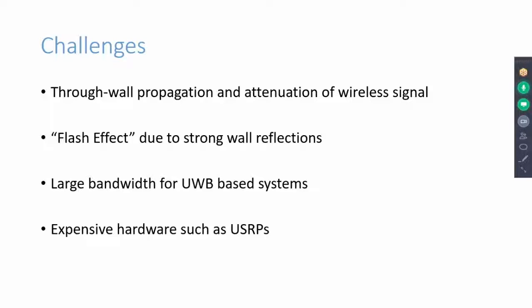There are many through-wall imaging radar systems that are based on ultra-wide bandwidth principle. But these bandwidth-hungry systems are not available for common use. Our literature survey shows that there are also few works that rely on USRPs, but these are very expensive RF front-ends.